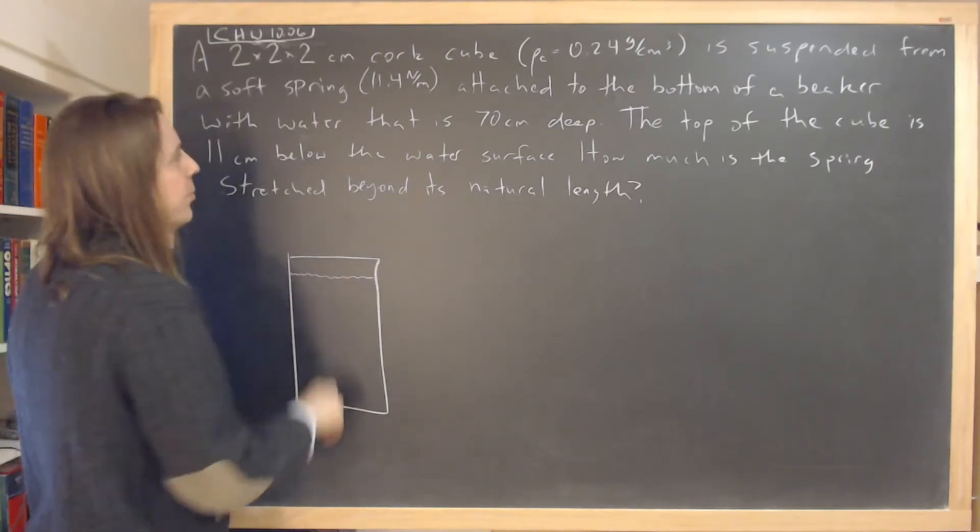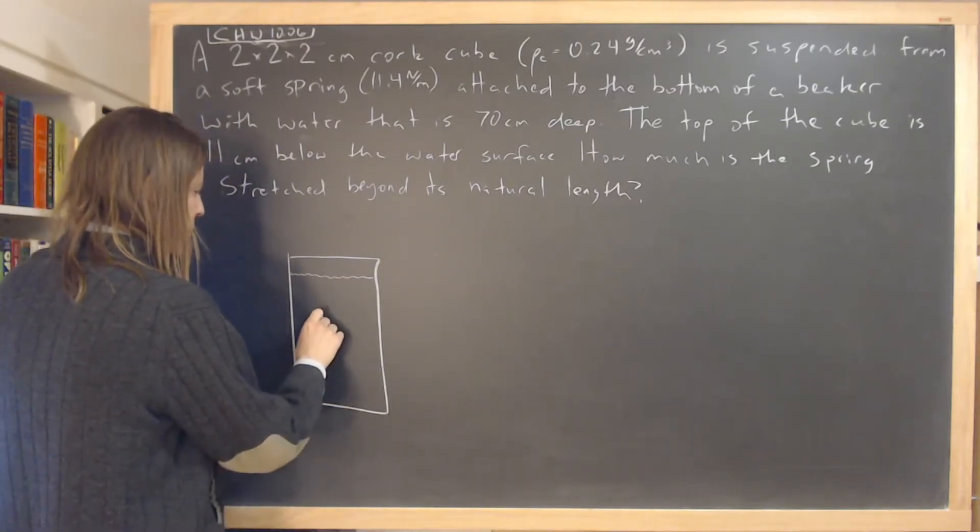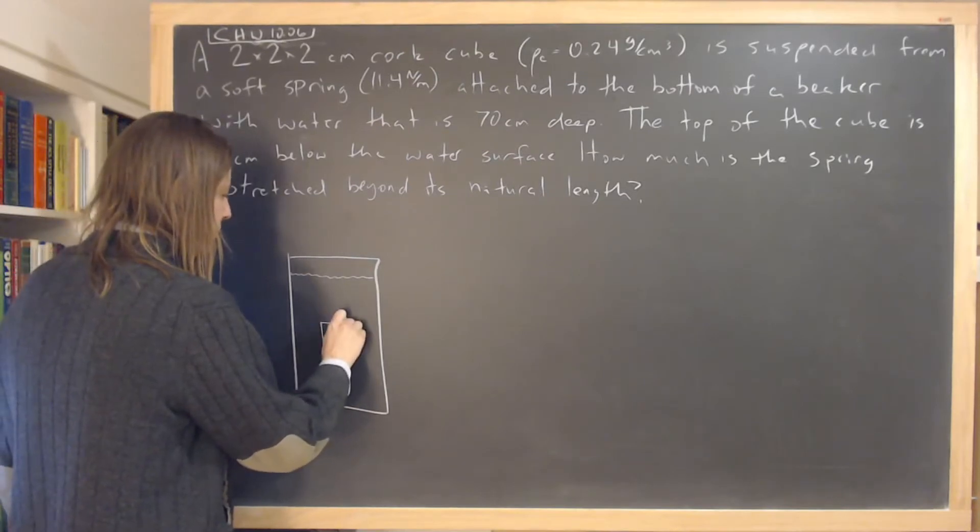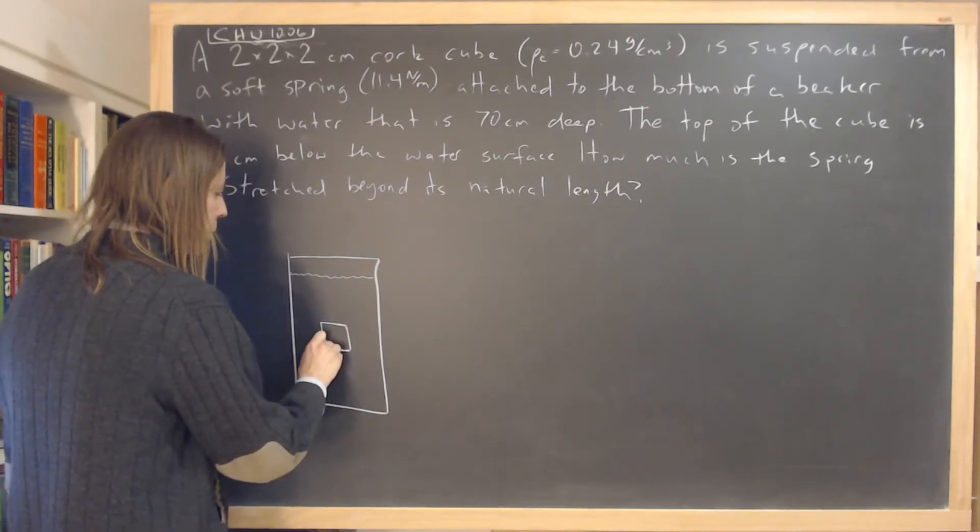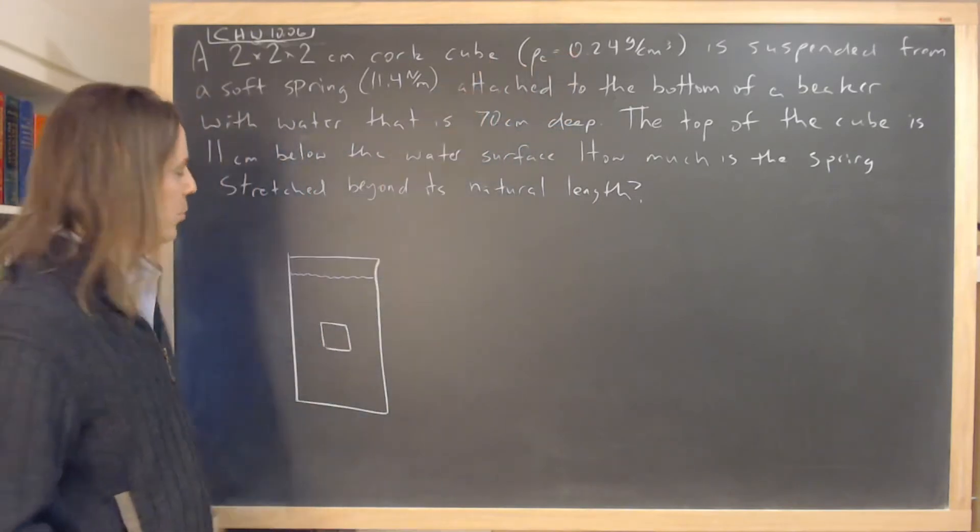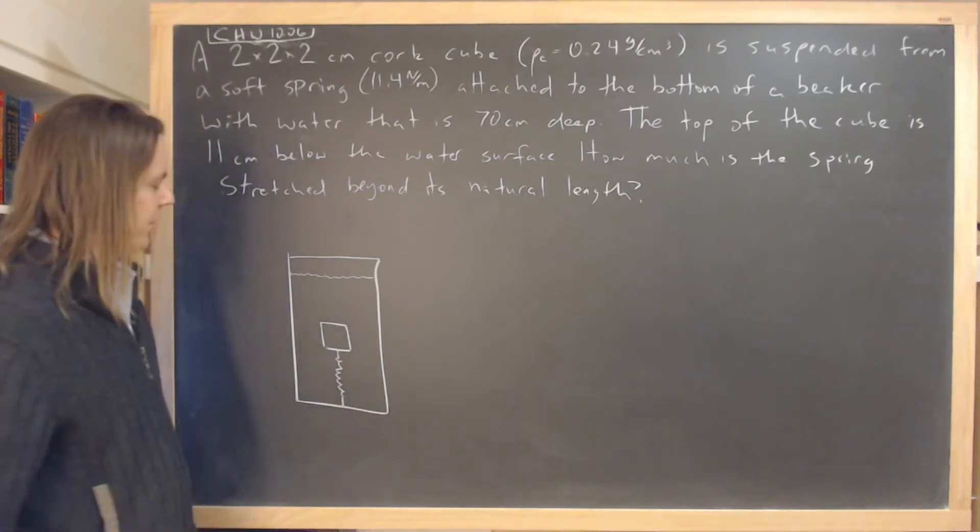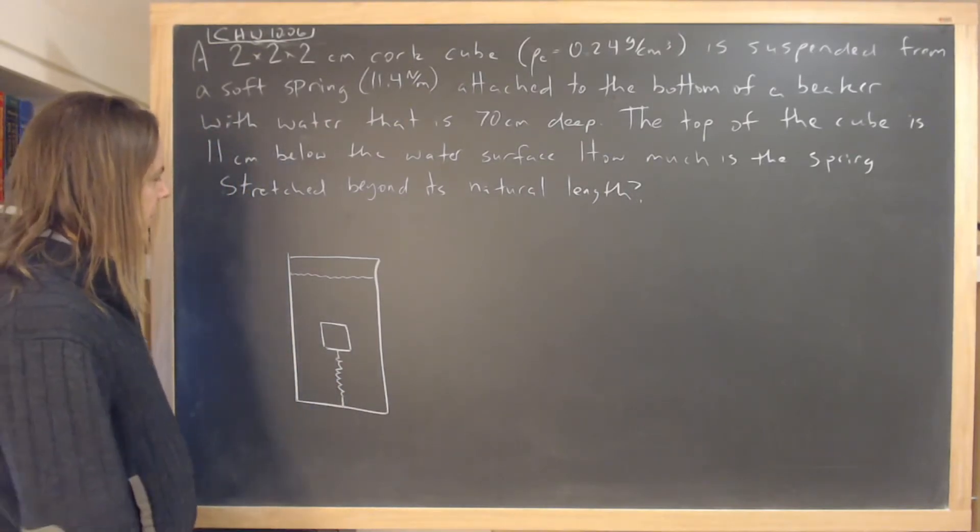I think we say it's water probably. Yes, a beaker with water. And what it means is a cork cube, if this is the cube here, would normally float, right? Its density is much less than water. So there's a spring holding it down. It's attached to the bottom of the spring. So there it is.